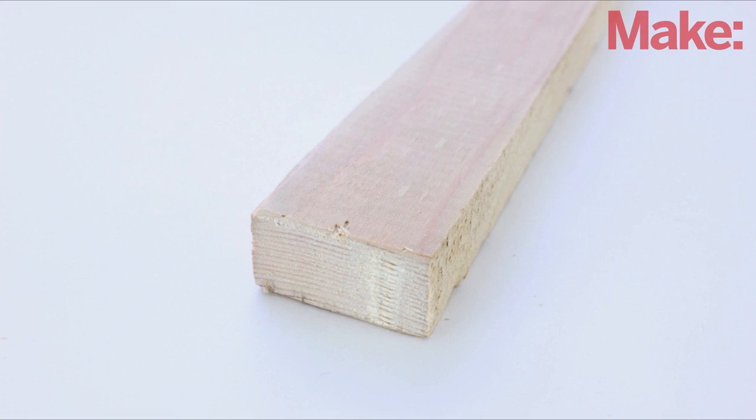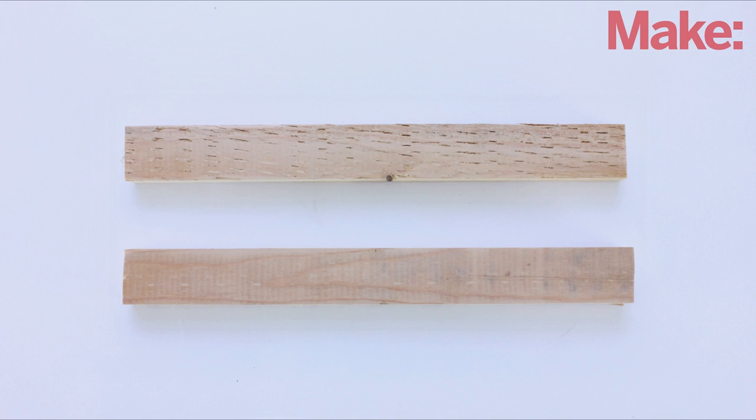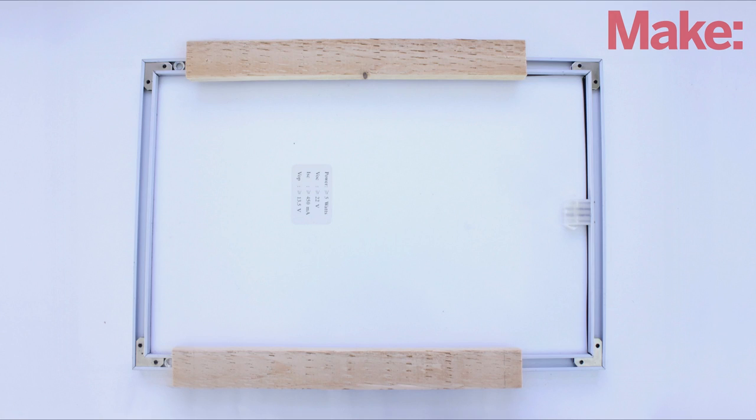Now we need to cut some pieces of 1x2 lumber to make the adapter. Cut two pieces that are an inch and a half longer than the spacing between the mounting holes on each side of the panel. These will be the side pieces of the adapter frame.